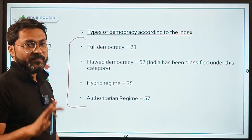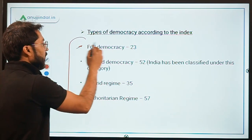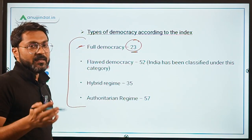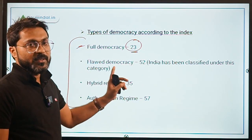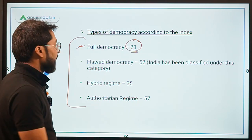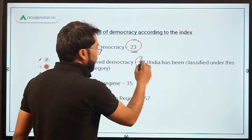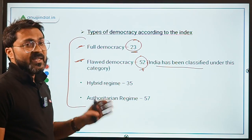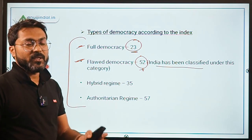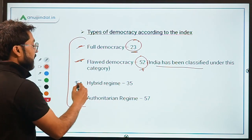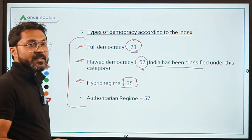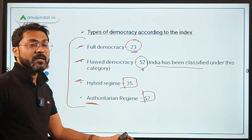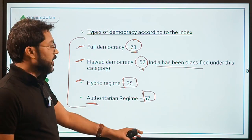There are five types of democracy in the world. Full democracy: 23 countries. Flawed democracy: 52 countries — India has been classified under this category, so India's democracy is classified as a flawed democracy. Hybrid regime: 35 countries. Authoritarian regime: 57 countries.